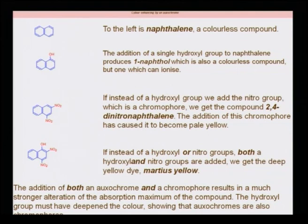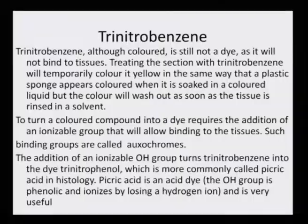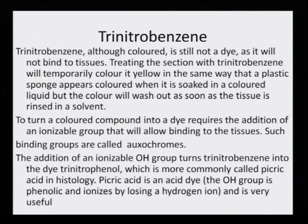Oxochromes are also enhancing the effect of the chromophores. Trinitrobenzene, although colored, is still not a dye — it will not bind to tissues. Treating a section with trinitrobenzene will temporarily color it yellow in the same way that a plastic sponge appears colored when soaked in colored liquid, but the color will wash out as soon as the tissue is rinsed with solvent. To turn a colored compound into a dye, it requires adding an additional ionizable group that will allow binding to tissues or material; such binding groups are called oxochromes.